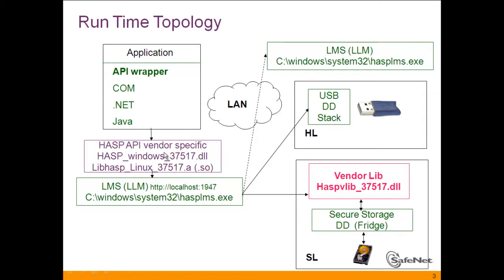This API works with the license manager. The license manager resides under C:\Windows\System32 and is called aspslms.exe. As we know, it communicates with other license managers on other machines and communicates with drivers for both HL and SL. We also have the vendor lib — something new we are discussing — with the format 'hasp_vlib_' underscore followed by the vendor ID. This DLL is the communicator in front of the secure storage of the SL key.